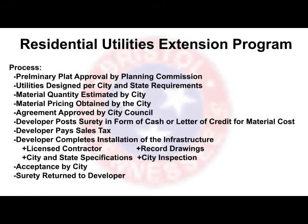The process is fairly simple. You have a preliminary plat approval by the planning commission, then you go through the normal design process. We do have new design standards that were adopted and are available online — just some slight modifications, but please feel free to download and review them. Utility designs will have to get approval by the state. Then we'll do an estimate on the covered materials and obtain pricing. We do yearly water and sewer bids, so pricing is already available each year, except for manholes, which are job-specific — so manhole pricing will be obtained based on the actual subdivision design.